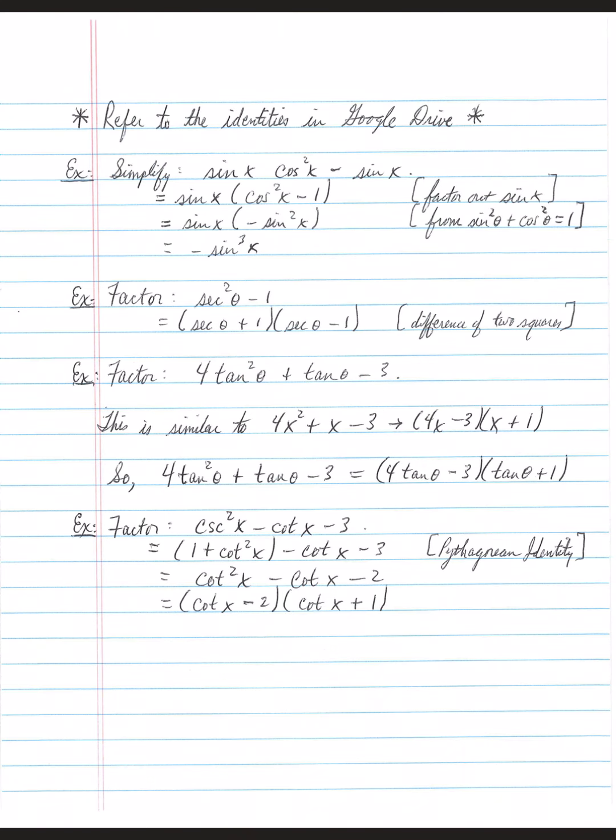If you have a trinomial, you want to make sure that your trig function is uniform throughout. In other words, tangent tangent—it's the same trig function. Now with these, if you wanted to compare with college algebra, because that's where you started learning to factor, you can think of your trig functions as a variable x. This is very similar to 4x² + x - 3. This makes it look more familiar.